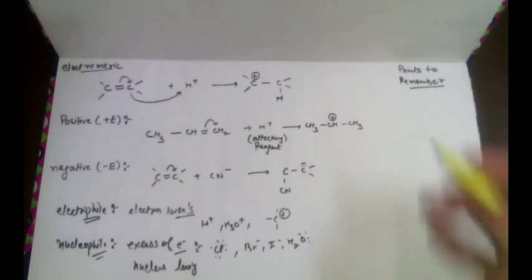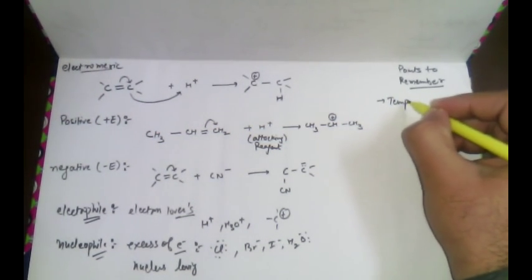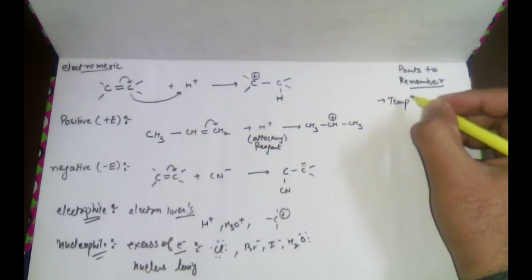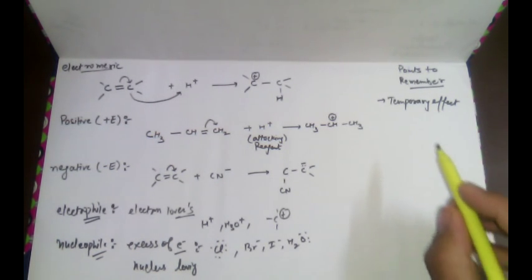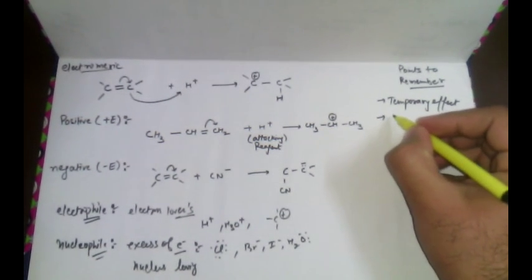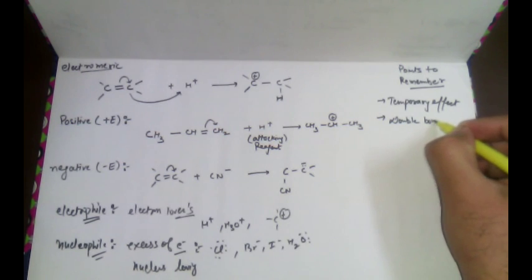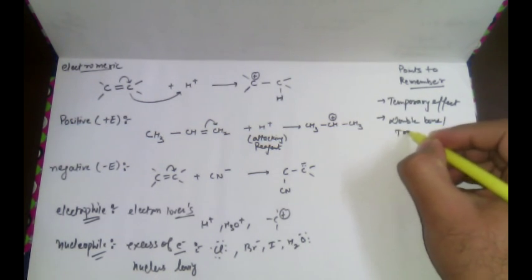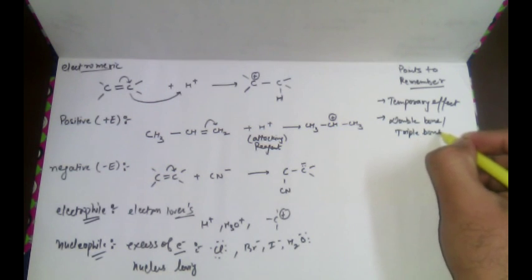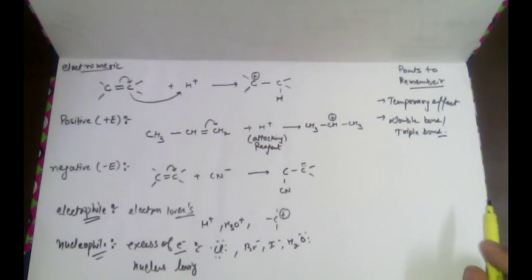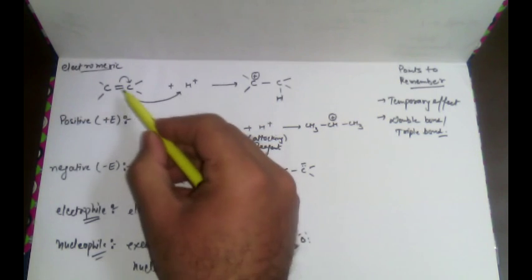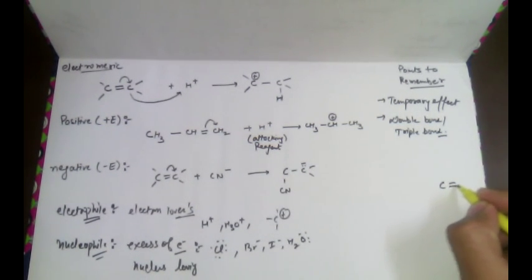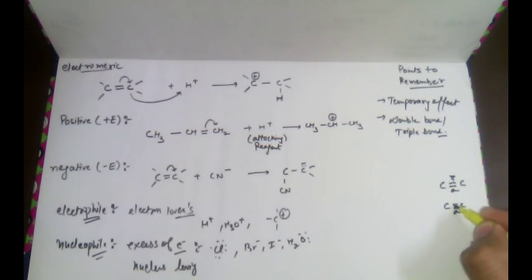The electromeric effect is a temporary effect. Points to remember: it is a temporary effect. The organic compound must have a double bond or a triple bond — a single bond is not allowed in the electromeric effect. In the presence of the attacking reagent, there is a complete transfer of the pi bond. The first bond is always a sigma bond; the second is always a pi bond.